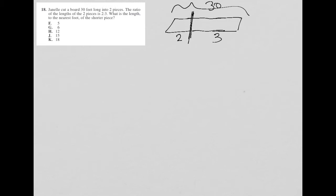And then it says, what is the length to the nearest foot of the shorter piece? Well, all together, so this is two parts and this is three parts is how I'm thinking of it. That means I have a total of five parts or five units. So that means that if this were 30 feet long, then 30 divided by five is equal to six.